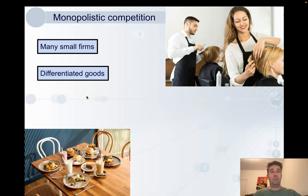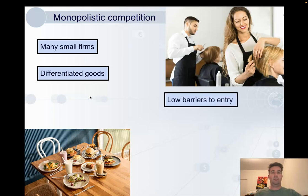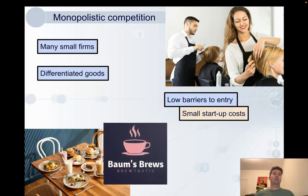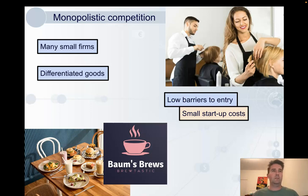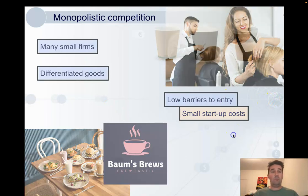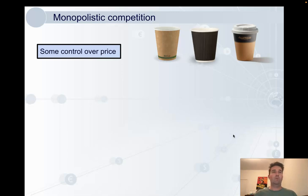Another assumption about monopolistic competition is that there are low barriers to entry. Say I want to start my own cafe — I have to rent a building, buy a coffee machine, do a barista course. So maybe tens of thousands of dollars — it's a barrier to me entering, not everyone's got that sort of cash, but it's a small barrier for a business to get over. They also have some control over price. You might be willing to pay an extra dollar for coffee from your favorite cafe, but there is a limit to that. If a firm raises prices too much, consumers will switch to a competitor, so they don't have complete control.